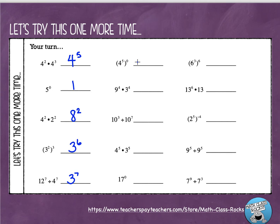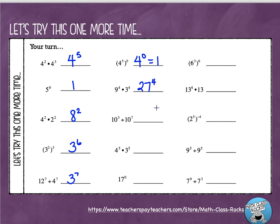Moving on: four to the fifth to the zero is a power to a power, so multiply the exponents and keep the base of four. Five times zero is zero, but any number to the zero power equals one. Next: different bases, same exponent — keep the exponent, multiply the bases: nine times three is twenty-seven, keeping the exponent of four. Then: ten to the third divided by ten to the seventh — same base, so keep ten and subtract the exponents left to right: three minus seven is negative four.